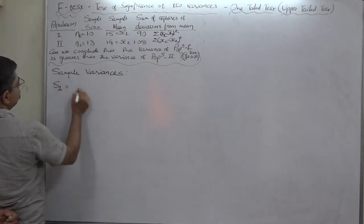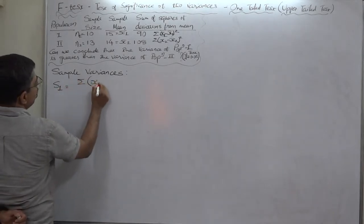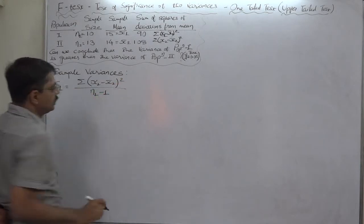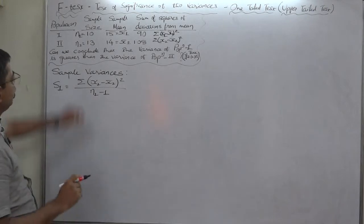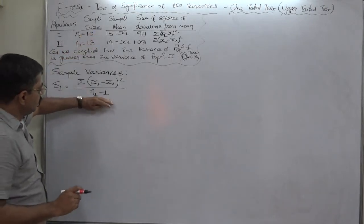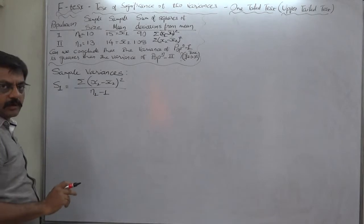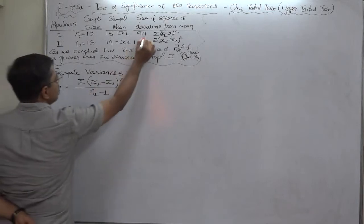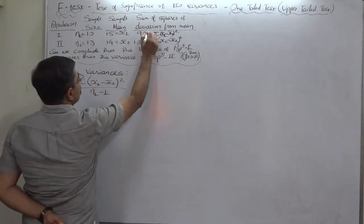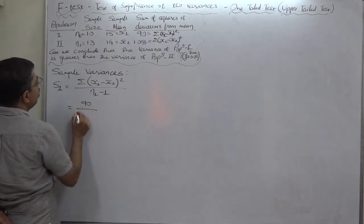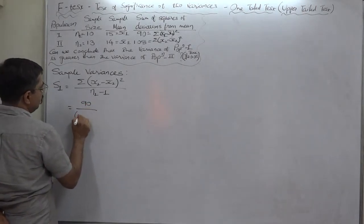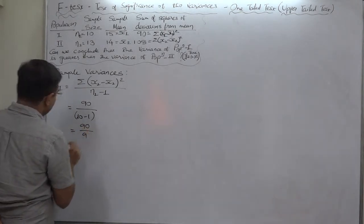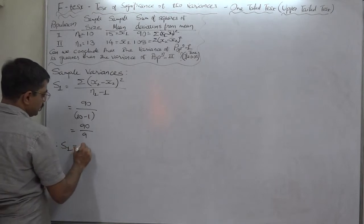S1² = Σ(x1 − x̄1)² divided by (n1 − 1). Since this is a case of a small sample, the denominator will be n1 − 1. That gives us 90 divided by 9, so the first sample variance S1² equals 10.